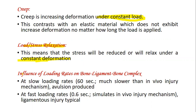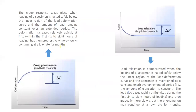The effect of loading rates on the bone-ligament-bone complex differs at slow and fast loading. At slow loading, avulsion is produced. At fast loading, there is a possibility of injury. For example, in the case of the ACL, torque is produced in the knee suddenly in very few seconds, causing injury because fast loading leads toward injury.